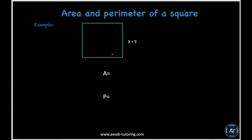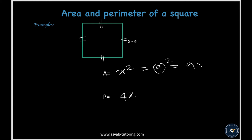Now we'll learn how to find the area of a square. A square is the same as a rectangle, but all sides are equal. The area of a square equals x squared, and the perimeter equals 4x. For example, with side 9: area equals 9 squared equals 81, and perimeter equals 9 times 4 equals 36.